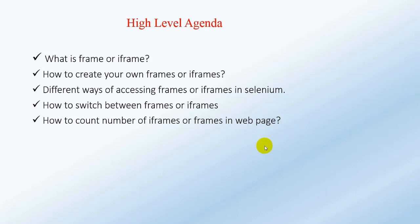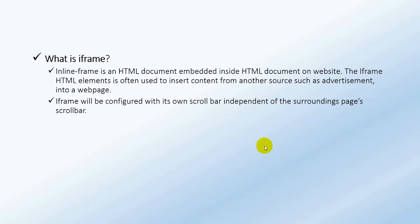Let us jump to the topic: what is an iframe? An iframe is nothing but an inline frame — an HTML document embedded inside another HTML document on a website. The iframe HTML element is often used to insert content from another source, such as an advertisement, into the web page. This iframe will be configured with its own scrollbar, independent of the surrounding page's scrollbar.